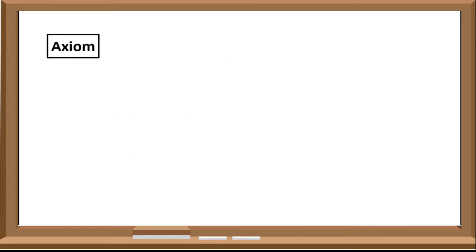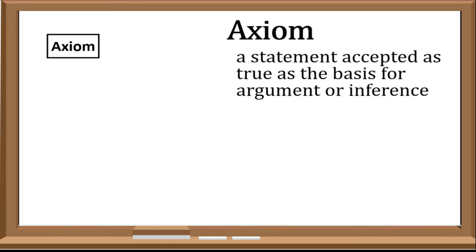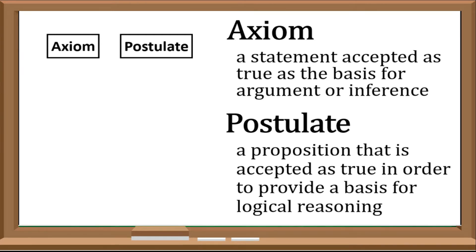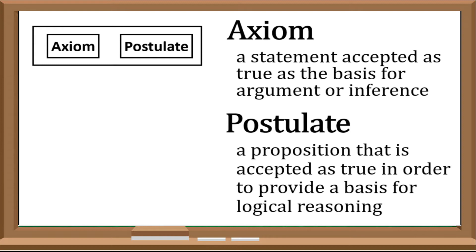First is axiom. An axiom is defined as a statement accepted as true, as the basis for argument or inference. Second is postulate. A postulate is defined as a proposition that is accepted as true in order to provide a basis for logical reasoning. As you can observe in the definitions, axiom and postulate are both statements or propositions that are accepted to be true for the basis of argument or logical reasoning.